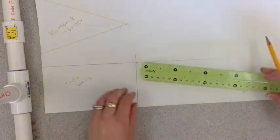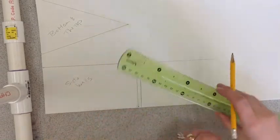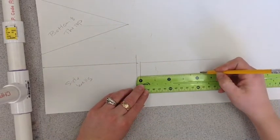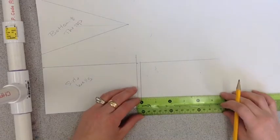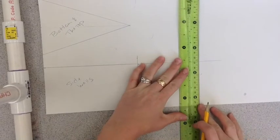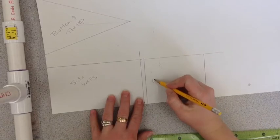I'm going to come over here. Make my line. Four inches and a quarter. Four inches and a quarter. Back wall.